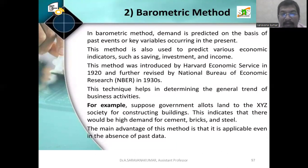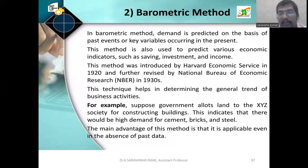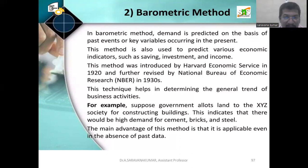Barometric method: in this method, demand is predicted on the basis of past events or key variables occurring in the present. This method is also used to predict various economic indicators such as saving, investment, and income. For example, if you are going to manufacture televisions and at budget time the television tax rate is reduced, immediately whatever televisions you manufacture you can sell at that lower cost. This method was introduced by the Harvard Economic Service in 1920 and further revised by the National Bureau of Economic Research (NBER) in the 1930s. This technique helps in determining the general trend of business activities. For example, if the government allots land to a society for constructing a building, this indicates that there would be high demand for building materials. The main advantage of this method is that it is applicable even in the absence of past data.